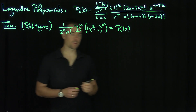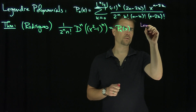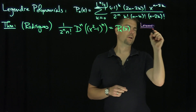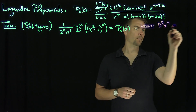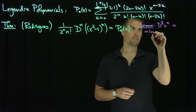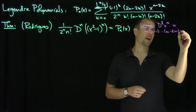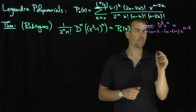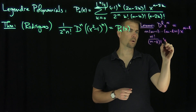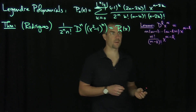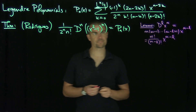We're going to do this in two phases. The key lemma we need is a simple exercise: if we take l derivatives of x to the m, what we get is m times m minus 1 times m minus l plus 1 — all the powers that come down — times x to the m minus l, which equals m factorial over m minus l factorial, times x to the m minus l.